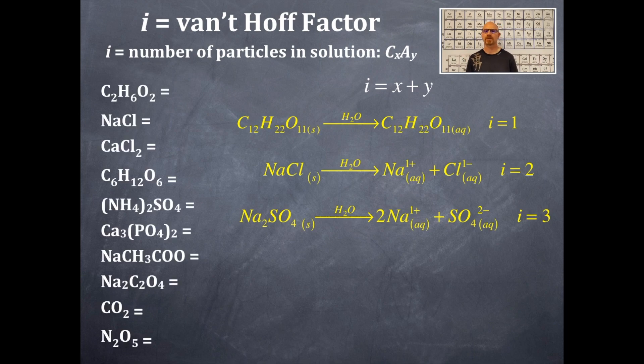And we'll do a bunch of them over here off to the side. So C₂H₆O₂, van't Hoff factor, what do you think that is? That's a molecule. That's a van't Hoff factor of one. NaCl, that's a cation anion combination. So how many cations do you see? One. How many anions do you see? One. So that's a total of two.